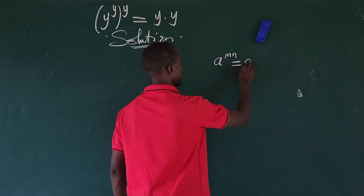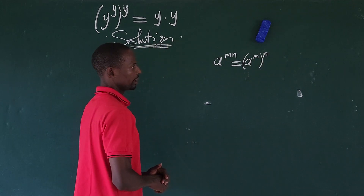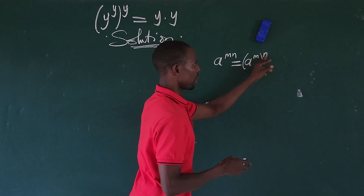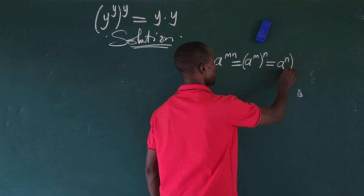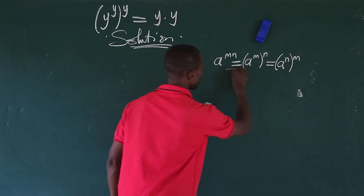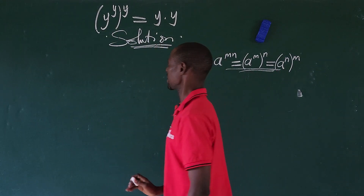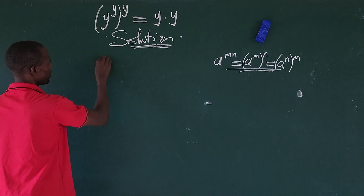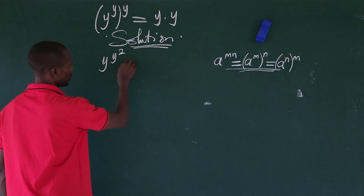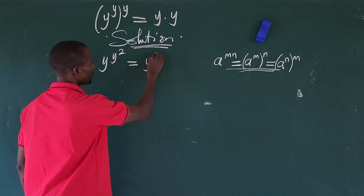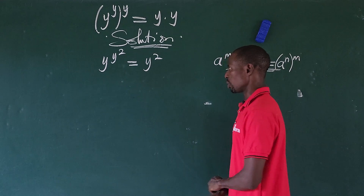...this is equal to a to the power of m, then to the power of n. We can interchange this power. So we can rewrite the left-hand side by multiplying y times y, which gives us (y^y)^2. This is equal to y squared, because y times y gives us y squared.